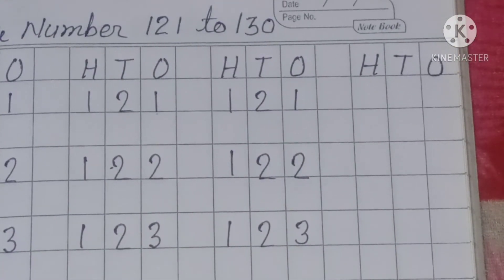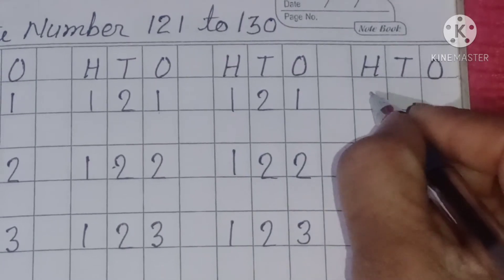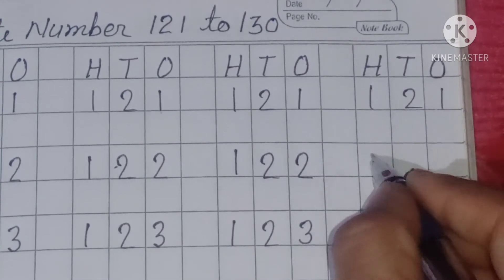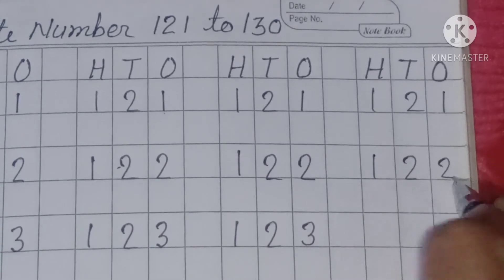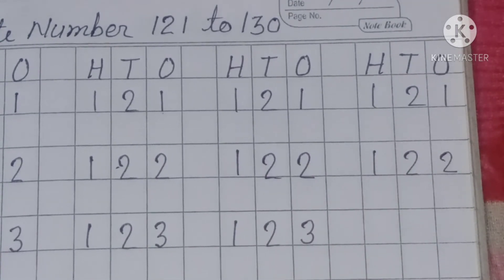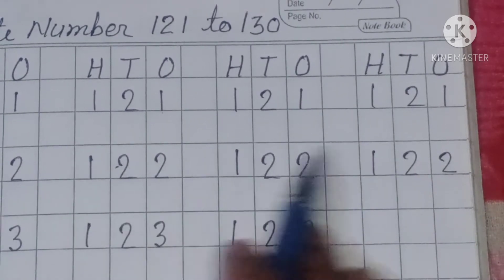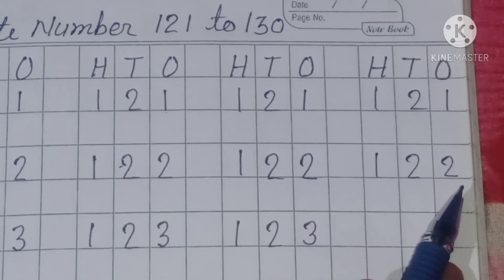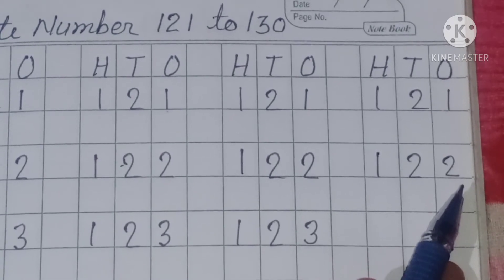121, repeat again: 121, 121, 122, 122. These are three-digit numbers. 121 to 130, three-digit numbers.